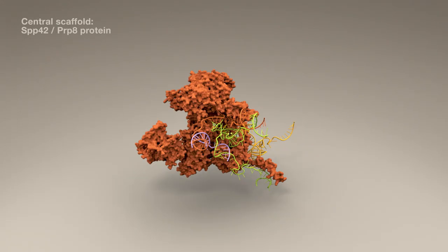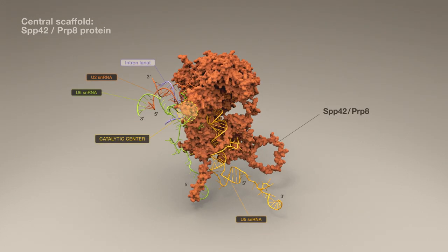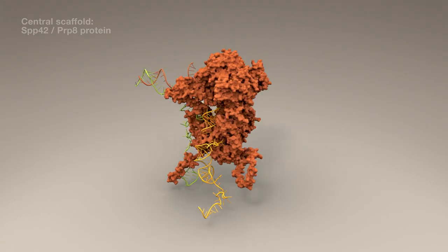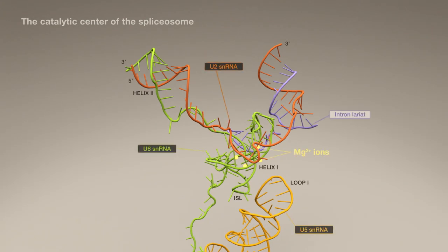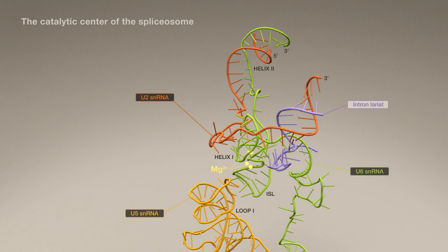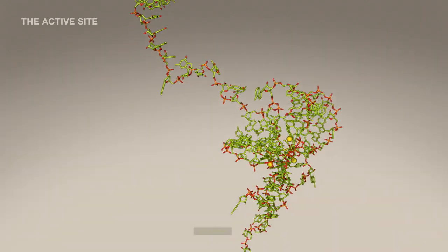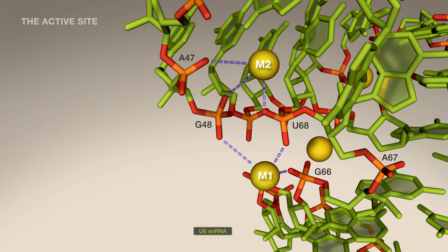The SPP42 protein acts as a central scaffold, to which spliceosomal RNAs converging in the catalytic center are anchored. The spliceosome is an RNA-directed metalloenzyme. The catalytic center consists of three spliceosomal RNAs and magnesium ions. Phosphate groups coordinate two key catalytic magnesium ions, M1 and M2.